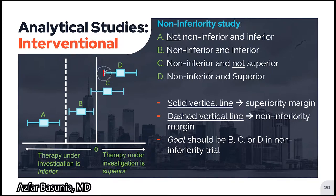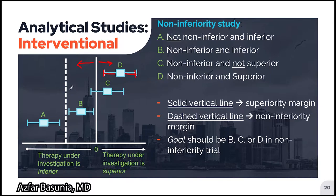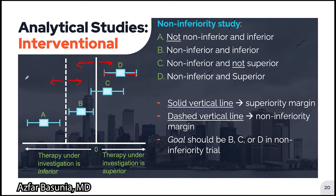If the effect and confidence intervals fall entirely to the right of the superiority margin, the results are considered superior. If they fall entirely to the left, the test therapy is considered inferior. With respect to the non-inferiority margin, if the results and confidence interval fall entirely to the right, they are considered non-inferior. If the results and confidence interval fall to the left of the non-inferiority margin, they are considered not non-inferior — a double negative.